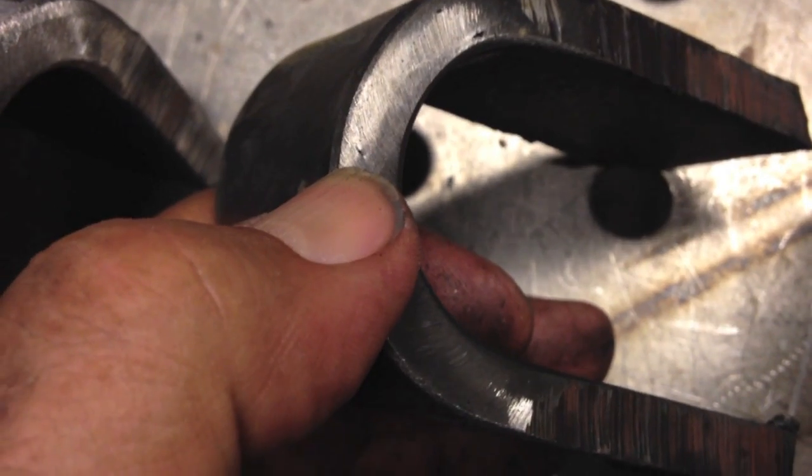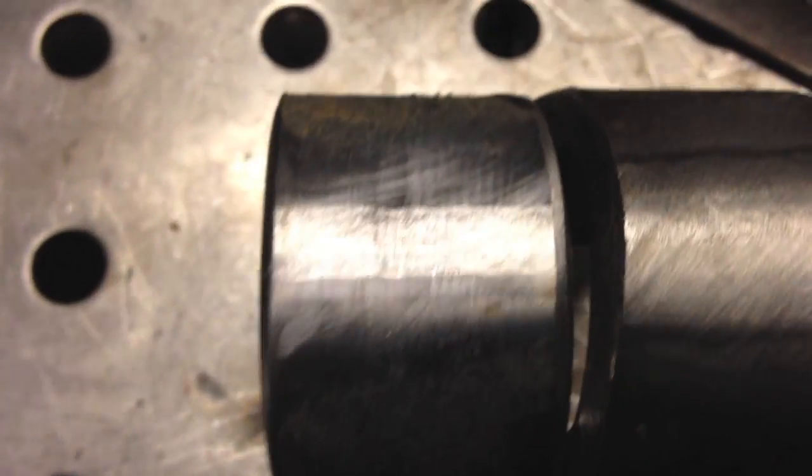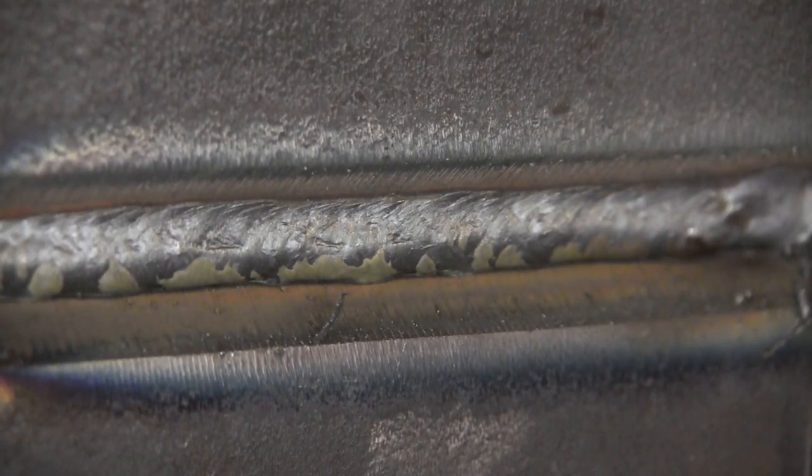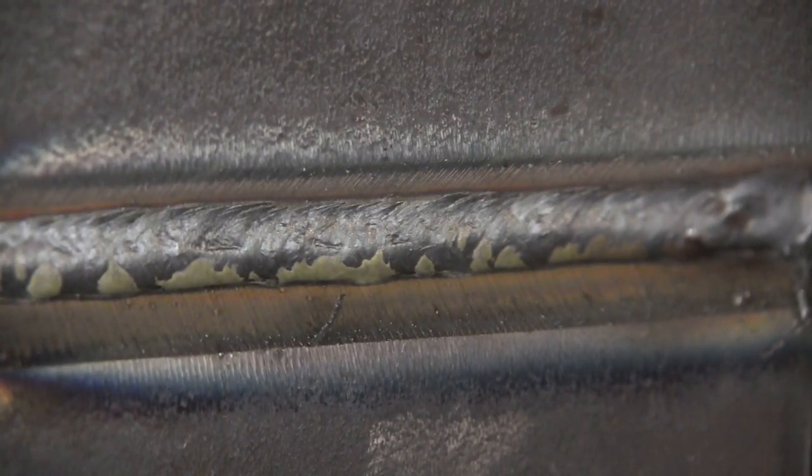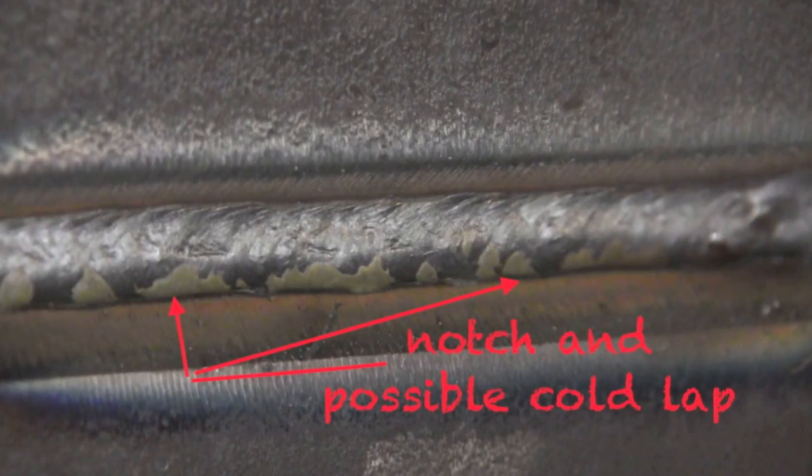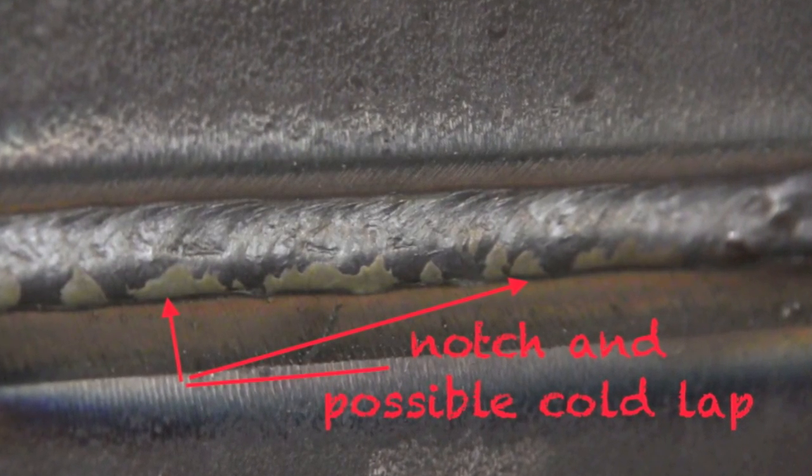Just a little lack of fusion there between the root and that first pass over the root. And so now we're going to go back and do an autopsy on that one. And look at it. We've got the same thing there, a slightly convex bead. It's kind of like there's a little notch in there, possibly some cold lap.